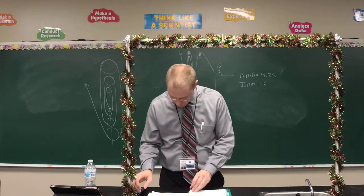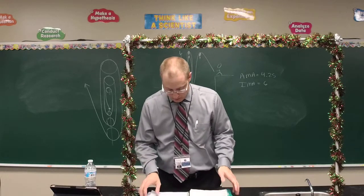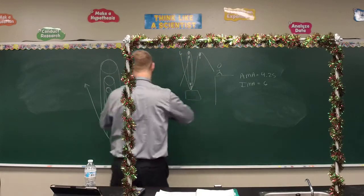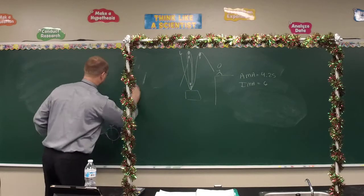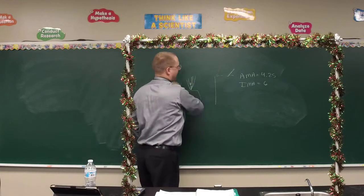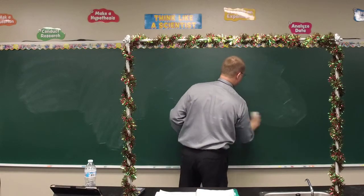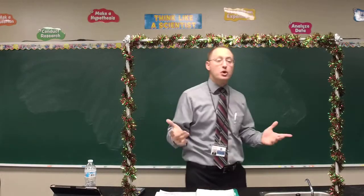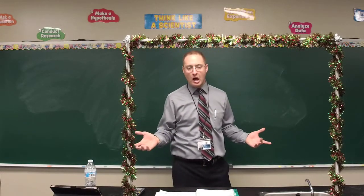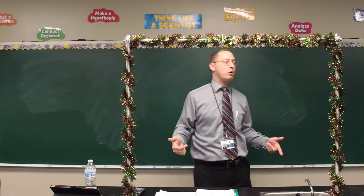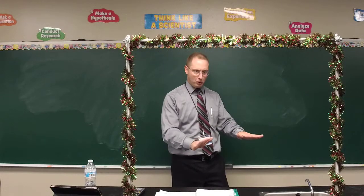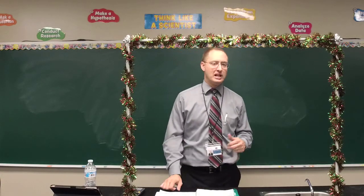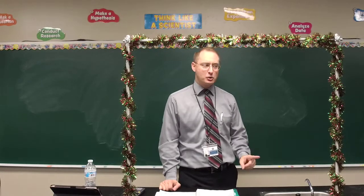Next simple machine — the last one we'll talk about — is the wheel and axle. You know what an axle is: two wheels on the same rod that turn together. But that's not really a machine — it doesn't multiply force, it just allows things to roll. For it to multiply force or speed, the wheel and axle has to have differing sizes of wheels. That's where it starts to multiply force.